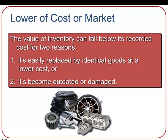Although we record items at cost following the cost principle, it's possible that the value of inventory may fall below its recorded cost. GAAP rules require a conservative value on inventory. This can happen for two reasons: the inventory is easily replaced by identical goods at a lower cost, or it's become outdated or damaged. The first case is common in high-tech electronics — as companies became more efficient making products like iPods and MP3 players, costs dropped drastically, meaning carried inventory wasn't worth as much as originally thought.